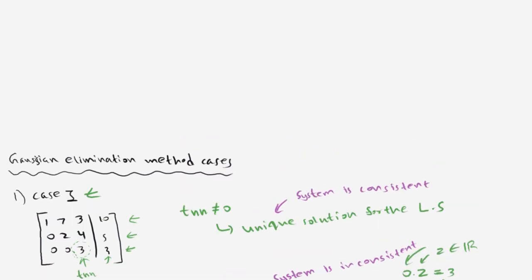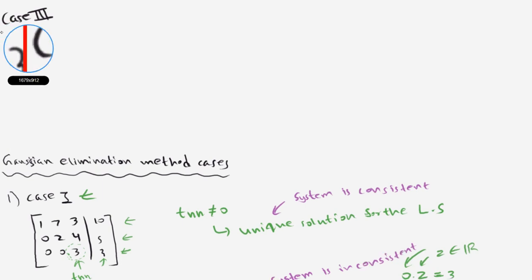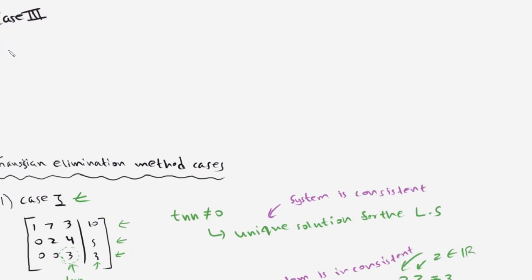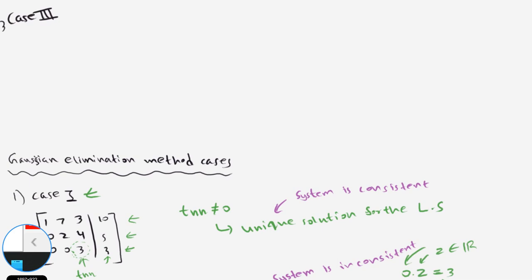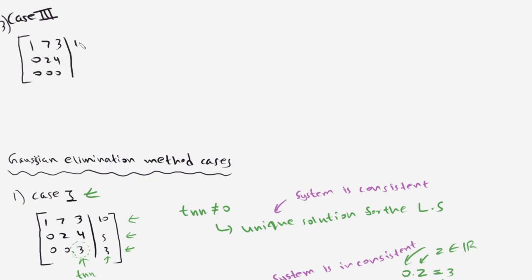In Case 3, the matrix looks like: row one has 0, 2, 4; row two has 0, 0, 0; row three has 10, 5, 0. In this case both tnn is 0 and cnn is also 0. This is the defining condition of Case 3.